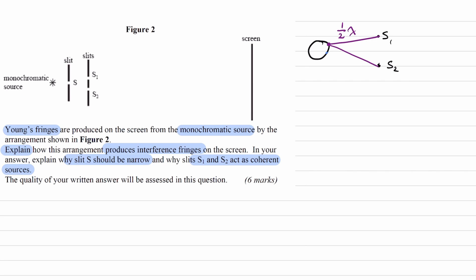Now consider a different spot on the light bulb (shown in blue). There's a certain length from that point to S1 and a certain length to S2. Let's say the path difference in this example is 1 lambda. For the purple rays, the path difference is half a wavelength, giving a phase difference of 180 degrees or pi radians. For the blue rays, the path difference is one full wavelength, so the waves remain in phase — a phase difference of 0 degrees.